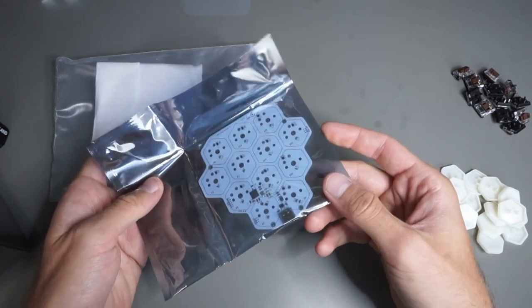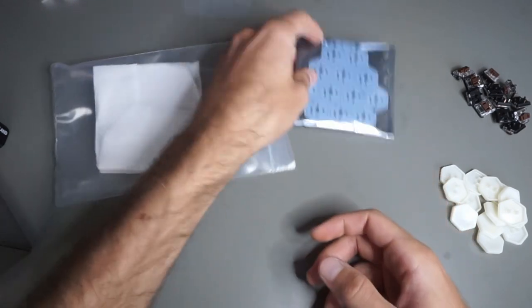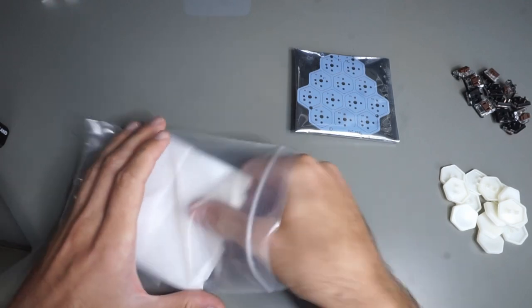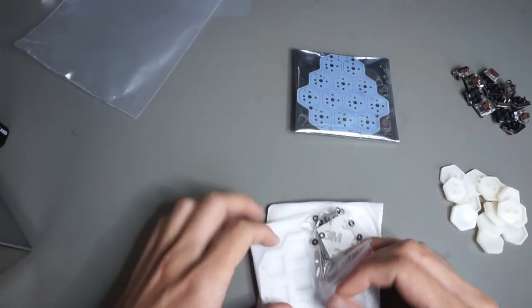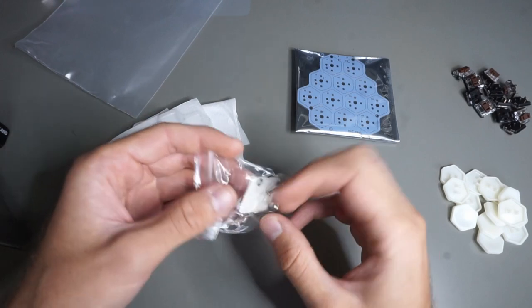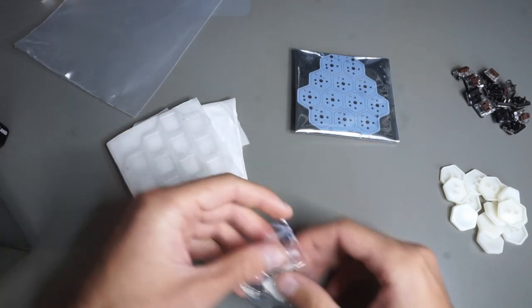The PCB already has the SMT components pre-assembled, so we will not have to solder those. And here's the hardware kit containing screws, spacers, and washers.